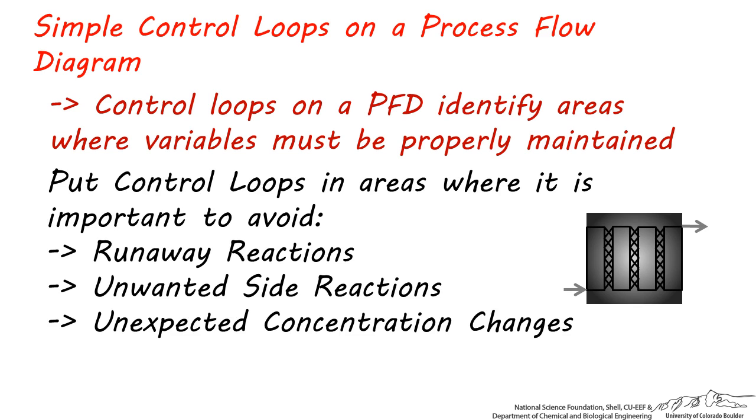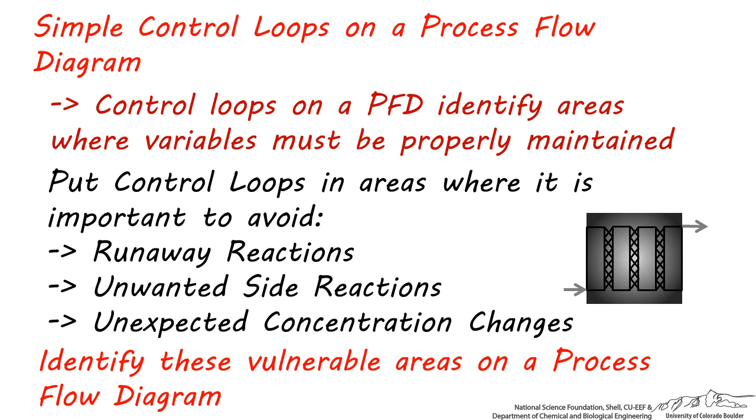Units like reactors and separators are particularly influential to the process, since one upset can lead to dramatic changes in the product. This is why we must identify these important and potentially vulnerable areas in a process flow diagram, so we are aware of the likely origins of unexpected problems.